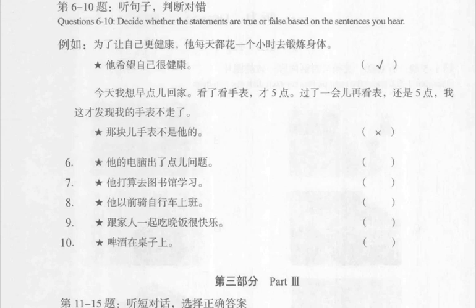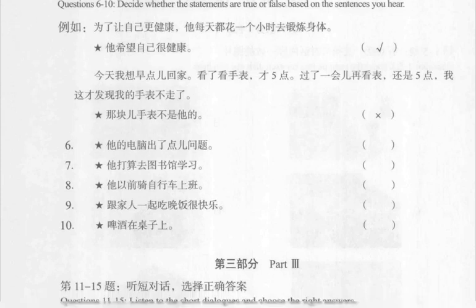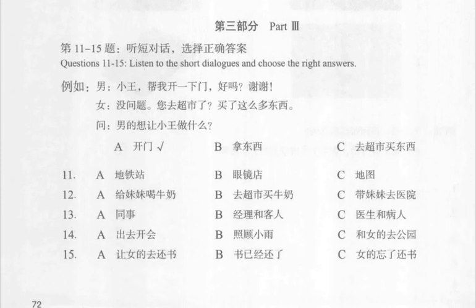第三部分。第十一到十五题，听短对话，选择正确答案。Questions 11 through 15: Listen to the short dialogues and choose the right answers. 例如。小王，帮我开一下门，好吗？谢谢。没问题，您去超市了，买了这么多东西。